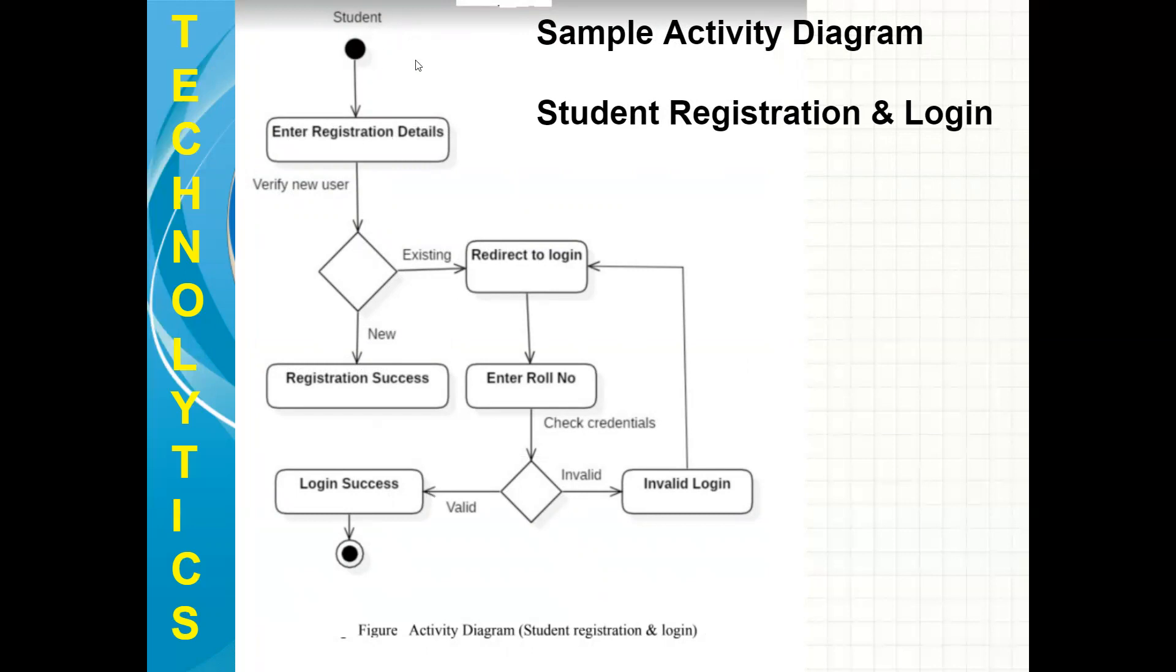This is for student registration and login activity. Again, the start symbol is there. First action is enter registration details. Then decision is there. If registration is already existing, then redirect to login. It will automatically redirect to the login process. Login process in this next action is enter roll number. If roll number is valid, then it will give a message as login success. If the credentials are wrong or invalid, then invalid login action will happen and it will redirect back to the login asking for the login details. Once the login is successful, it will end the process.